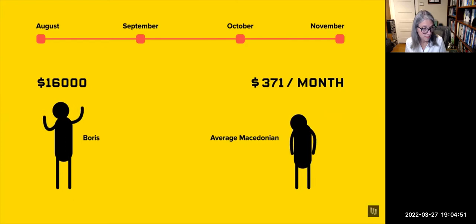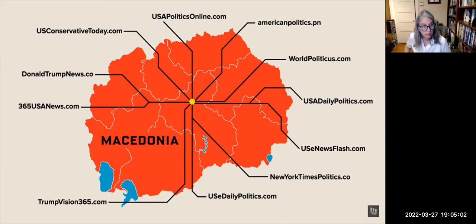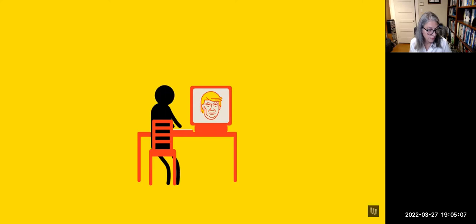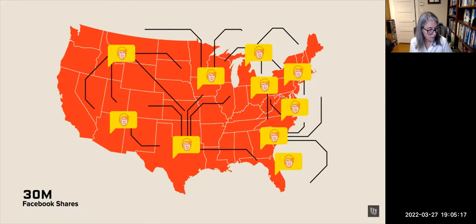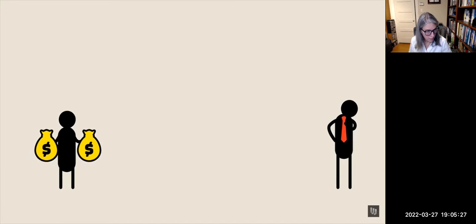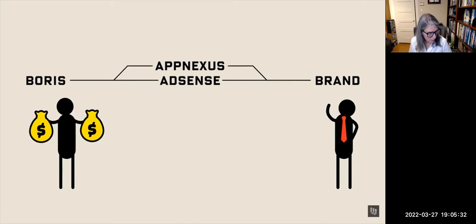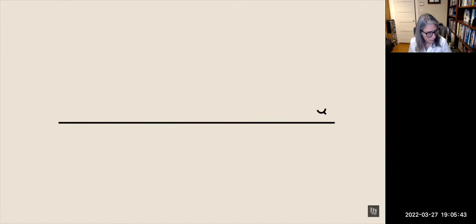Boris was not alone. In the final weeks of the election, there were more than 100 political websites registered to Veles. The most popular stories were pro-Trump — not because the publishers liked the candidate, but because they liked the money. Trump supporters happened to be more likely to share fake news. Researchers tracked 30 million shares of pro-Trump stories on Facebook in the months before the election. But why were companies advertising on fake news sites? Those ads were placed by services like Google AdSense or AppNexus, which act as intermediaries between advertisers and small-time publishers.